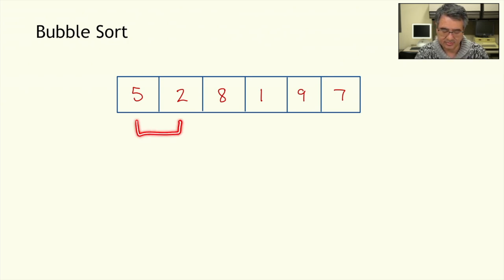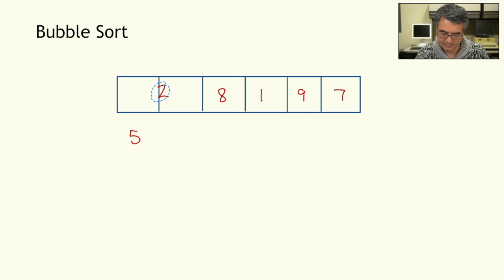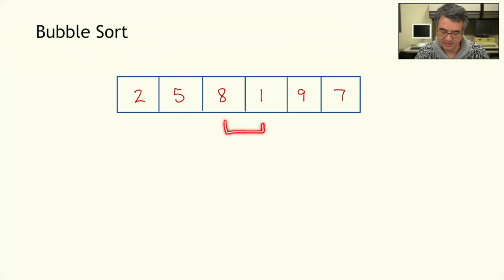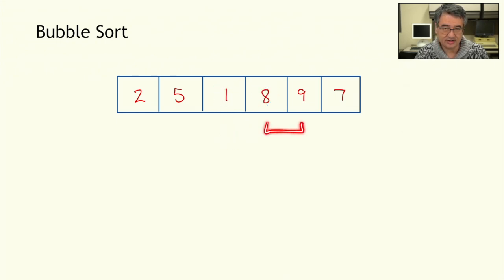We're going to start by comparing the first two values of the array. We see that they're not in the correct order, so we're going to swap them. Then we look at the next two — these are in the correct order, so there's nothing we need to do. At the next two, 8 and 1, those need to be swapped. And then the next two, 8 and 9, those are in the correct order. And then 9 and 7 — we'll swap those.